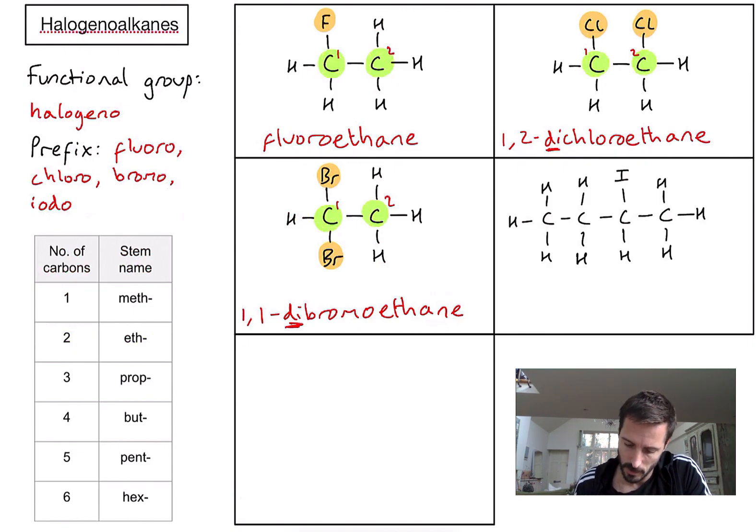Fourth example. This time I've got an iodine bonded to the carbon. Let's count the carbons in the main chain: one, two, three, four. So we're looking for the stem name but. I can write butane at the end of my name.